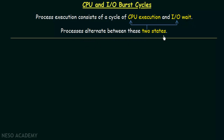Processes alternate between these two states. When a process has begun its execution it is under the CPU execution state, meaning it is making use of the CPU. After that, the process may need to wait for an input/output operation to complete in order to continue its execution. At that time, when it is waiting for an IO operation, we say the process is in IO wait state. When we use the term CPU burst, what we mean is the time when the process is under CPU execution.